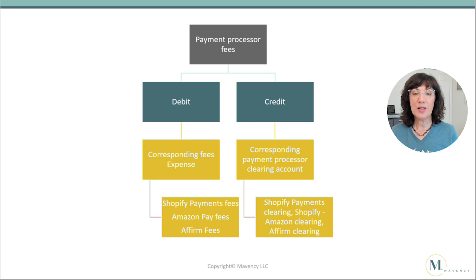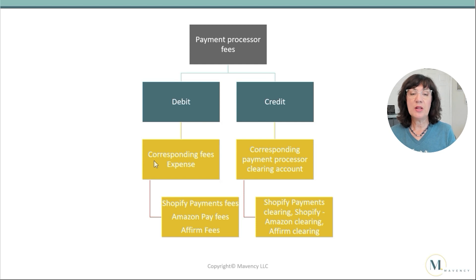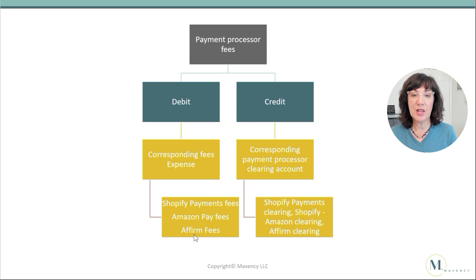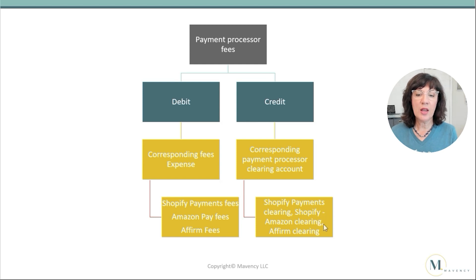Here are some tips to help with debits and credits. For payment processor fees, debit — put amounts in the Debits column — for the expense, using an account that corresponds to the payment processor: Shopify Payment Fees, Amazon Pay Fees, Affirm Fees, etc. For the Credits column, use the corresponding payment processor clearing account — whether that's Shopify Payments Clearing, Shopify Amazon Clearing, or Affirm Clearing. So: debits are expenses, credits are the payment processor clearing accounts.